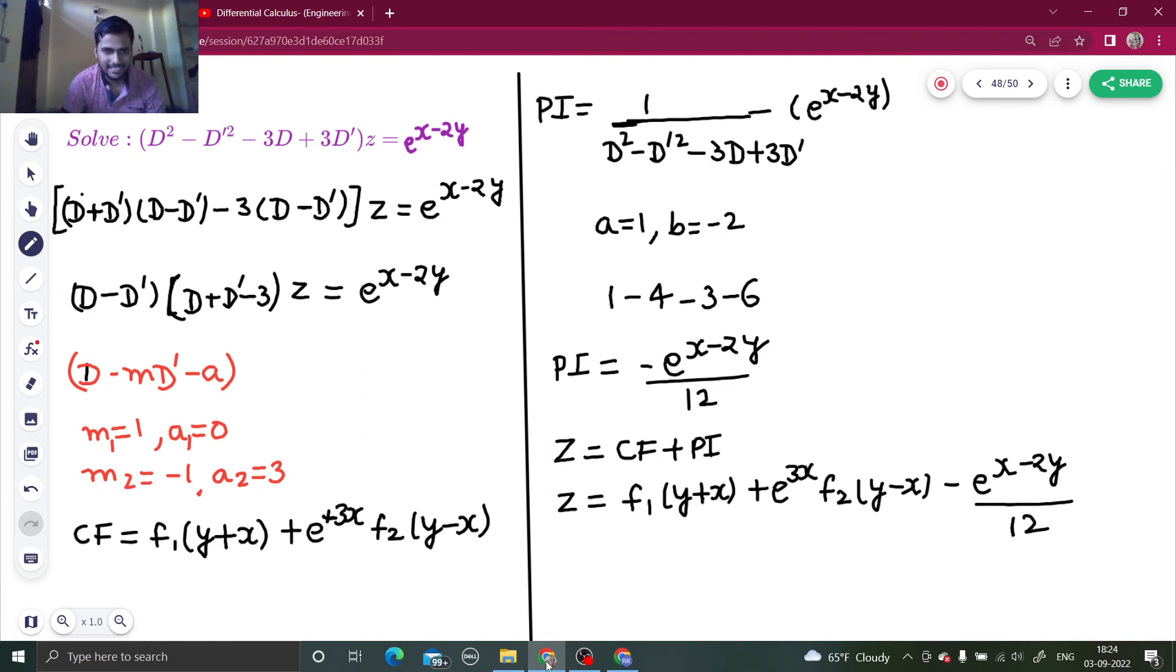It was easy. For finding complementary function, you need to factorize and compare each factor to d minus m d dash minus a. From there, I get the values of m and a. Write the complementary function which is of the form e power ax f1 y plus mx. Depending on the values of m and a, it will change. And coming to the particular integral, because it was of the form e power ax plus by, write a as 1 and b as minus 2. Because it was not 0, that was only our pi. So, z equals to cf plus pi was our final solution which we got in front of us.